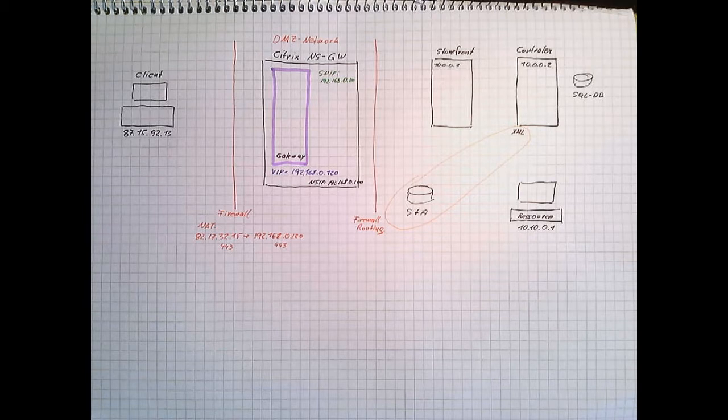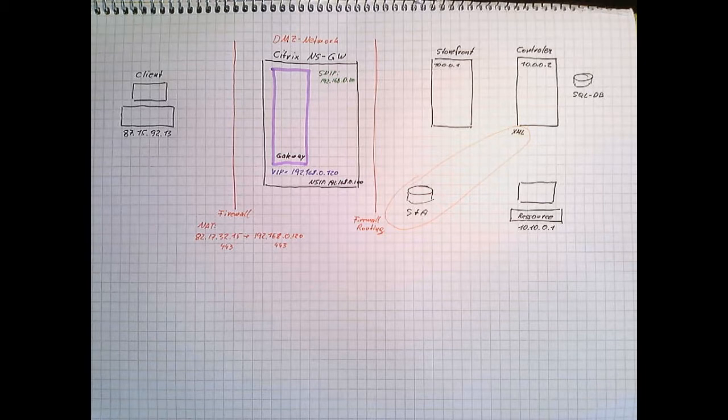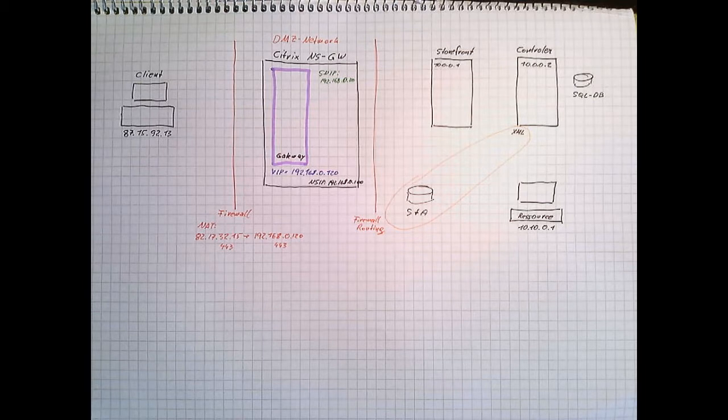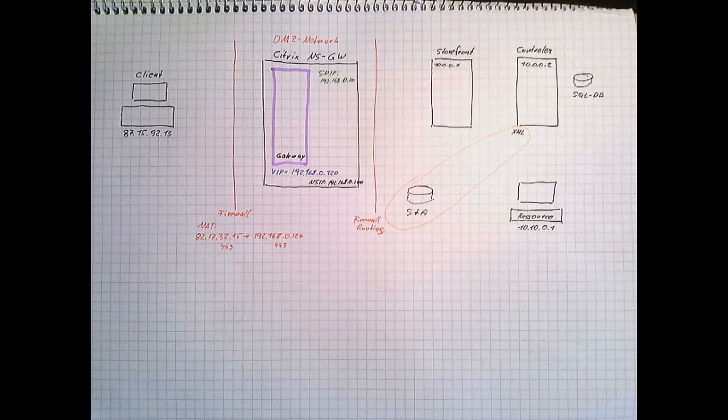The inside firewall is just routing. We got storefront server inside, 10.10.0.001. We got a controller, 10.10.0.002. This controller is connected to a SQL database. Of course the controller got an XML service on it. XML service is very important for two reasons. First of all it's used to connect storefront to the controller. Second it contains the SDA. And last not least we got a resource. I have painted a computer but this may be a server operating system. The IP address is 10.10.0.001.